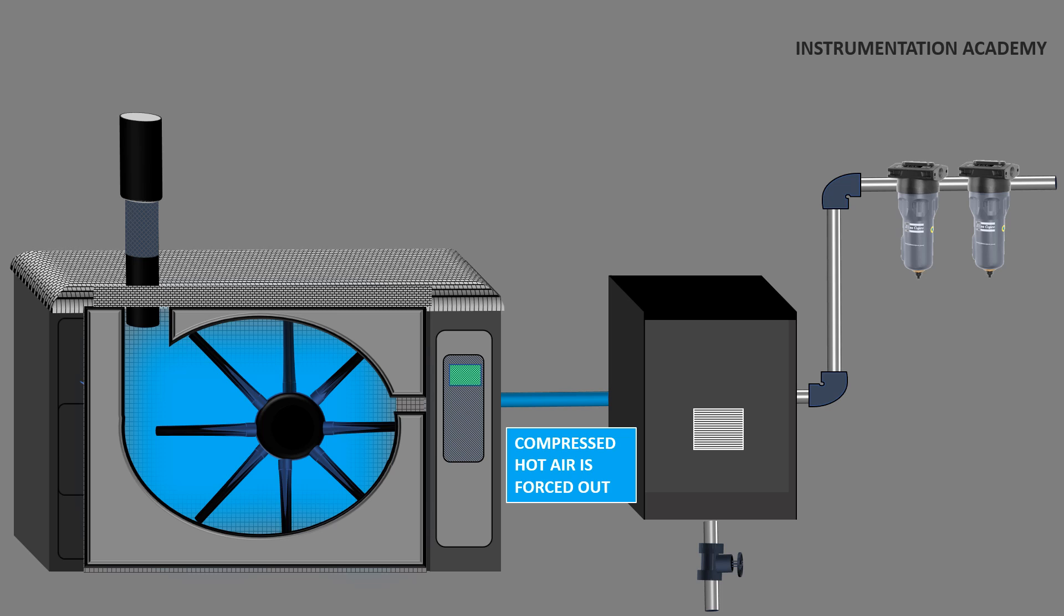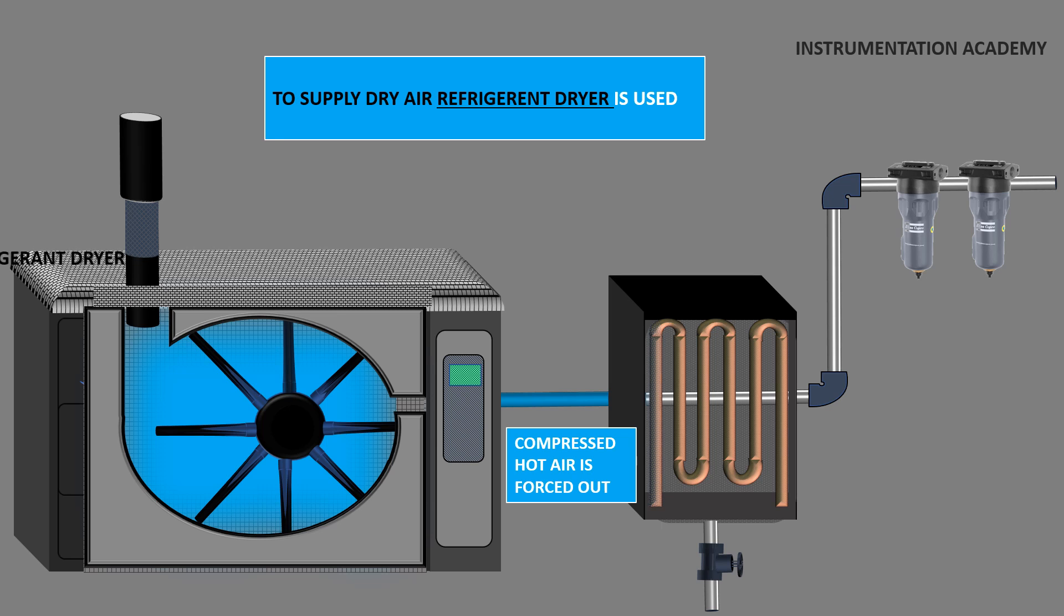Moisture in the compressed air used in oxygen plant can cause problems in the operation of the plant and can adversely affect the process. In order to avoid this problem and to supply dry air, an air refrigerant dryer is used. This refrigerant dryer eliminates any water vapor remaining in the compressed air.